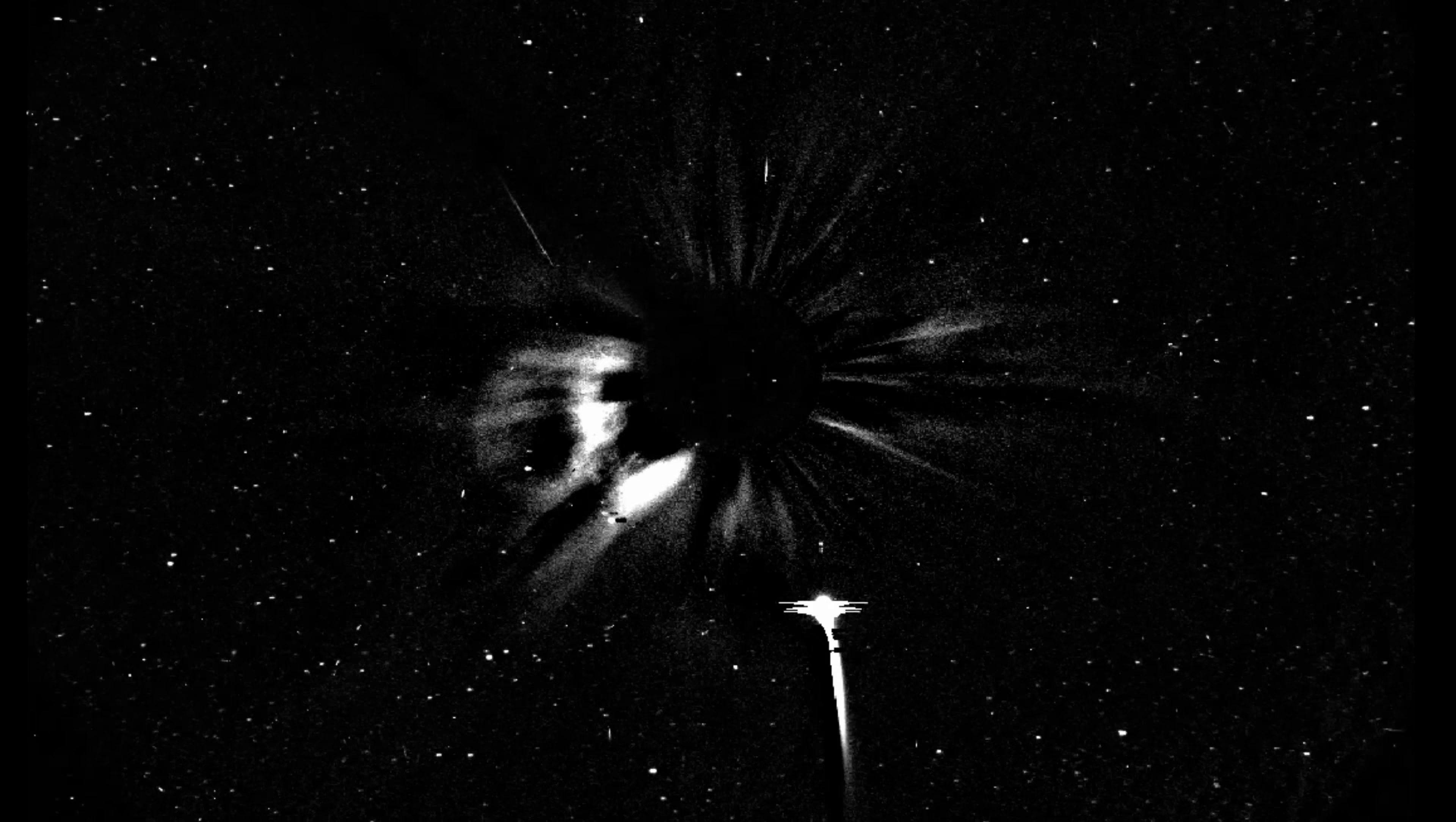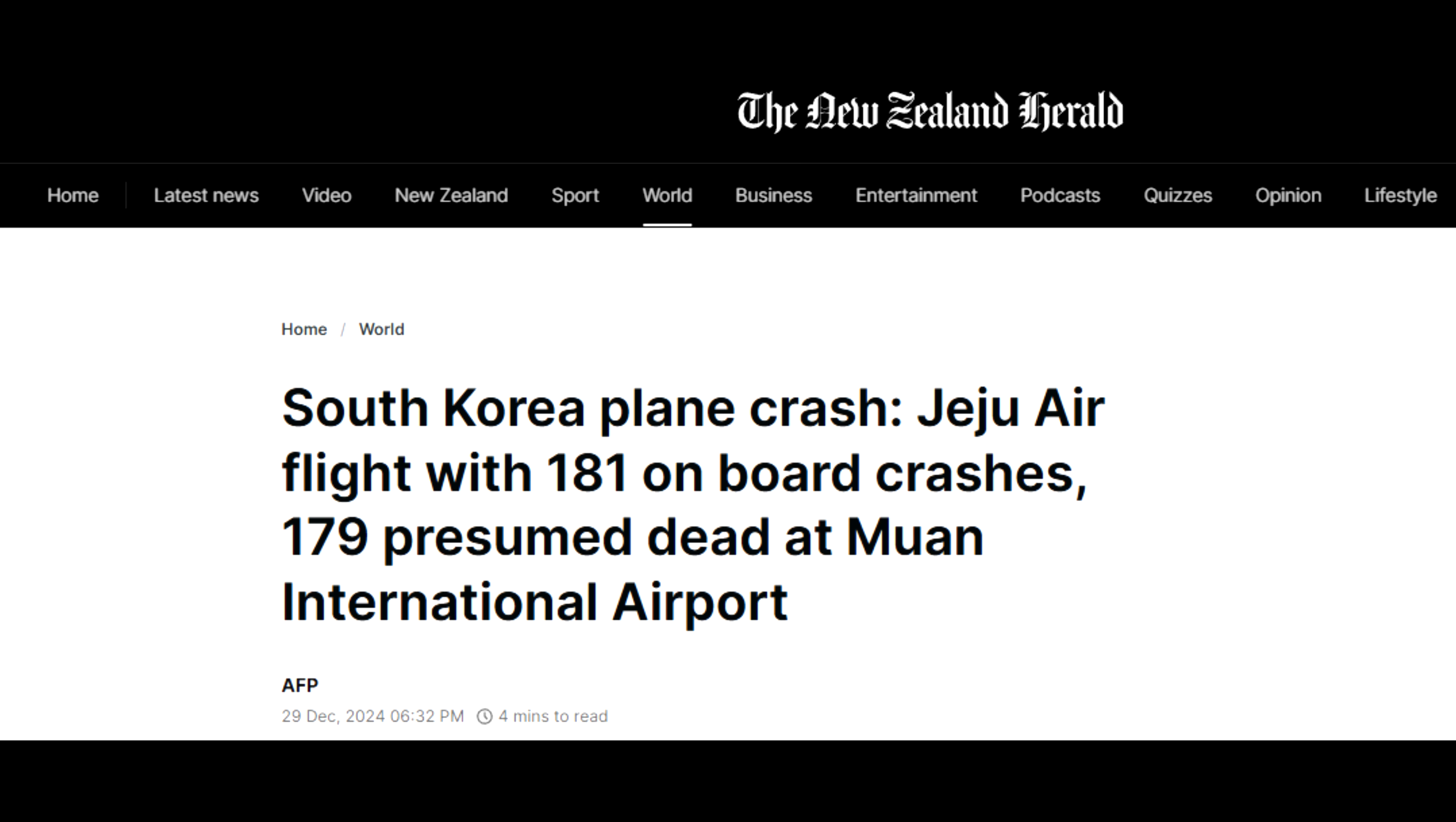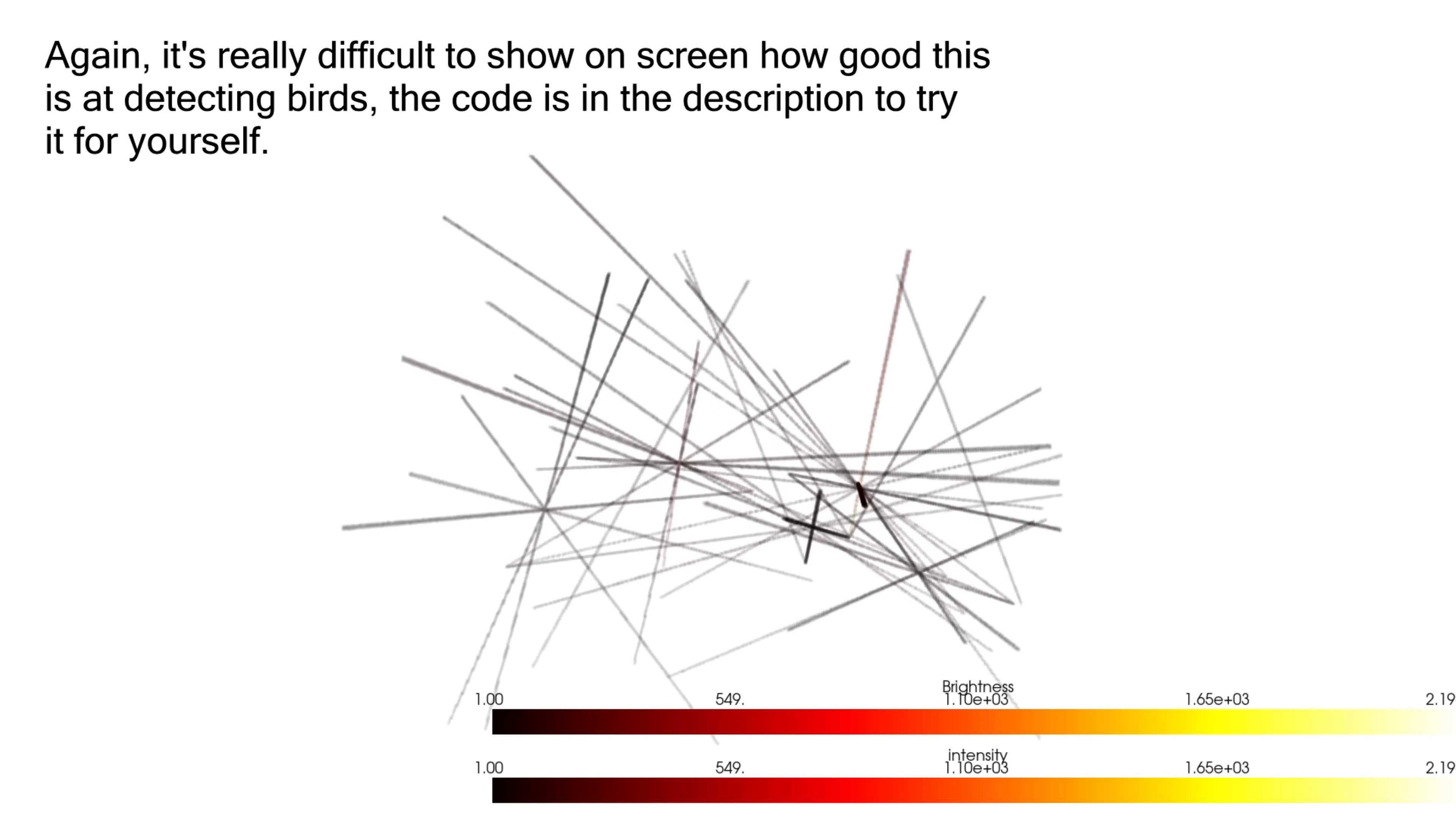It would make detecting Planet 9 trivial even using existing telescopes, which I was originally planning on doing. But as much as I want to name it after my cat, it also would take a lot of time to go through the data sets. And after recent tragic events I realized how good it would be at detecting birds, so I figured I would post this to get the word out before they cause another plane crash.